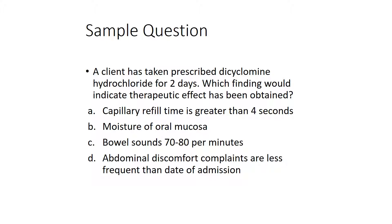Option B, moisture of oral mucosa: these are anticholinergics and they're going to dry out rather than cause moisture, so B is not indicated with this medicine. Option C, bowel sounds 70 to 80 per minute: that's too many bowel sounds and not a good thing — it means the bowel is working overtime. Option D, abdominal discomfort complaints are less frequent than on date of admission — that's what we want to see. That is the correct choice because this medicine is used to settle the stomach down, and it has indeed done that.